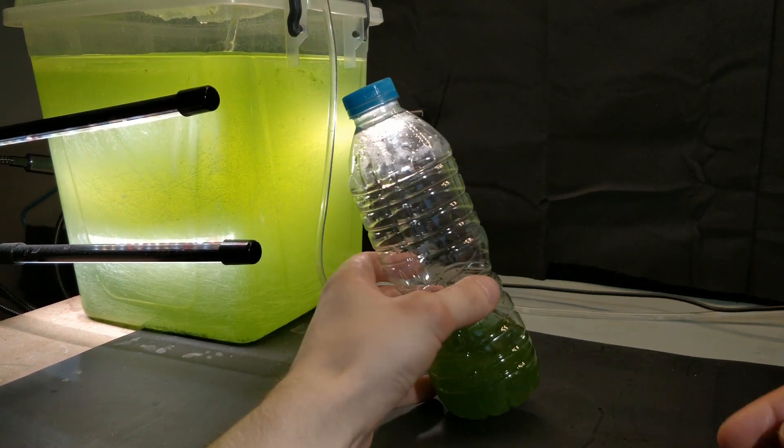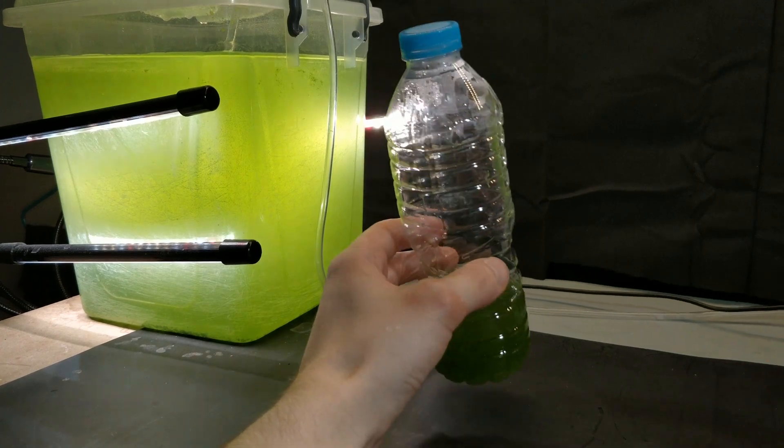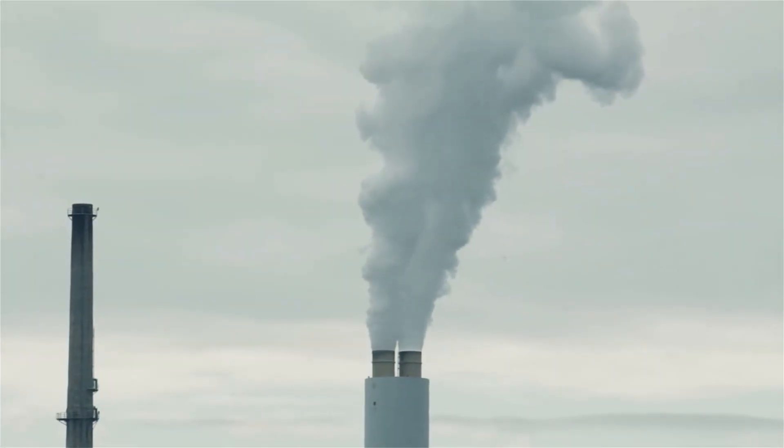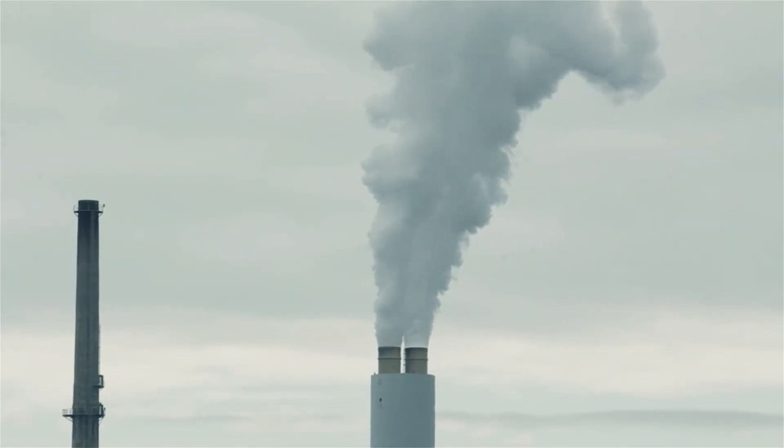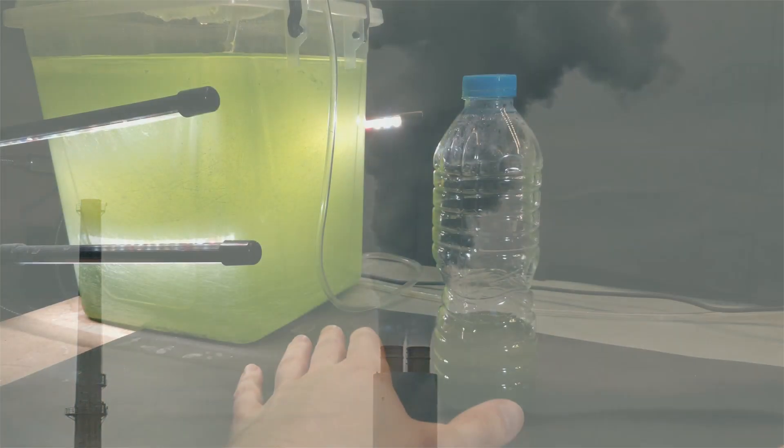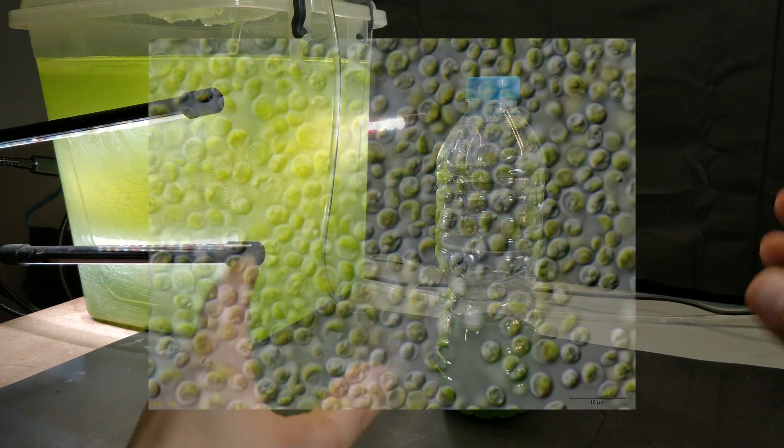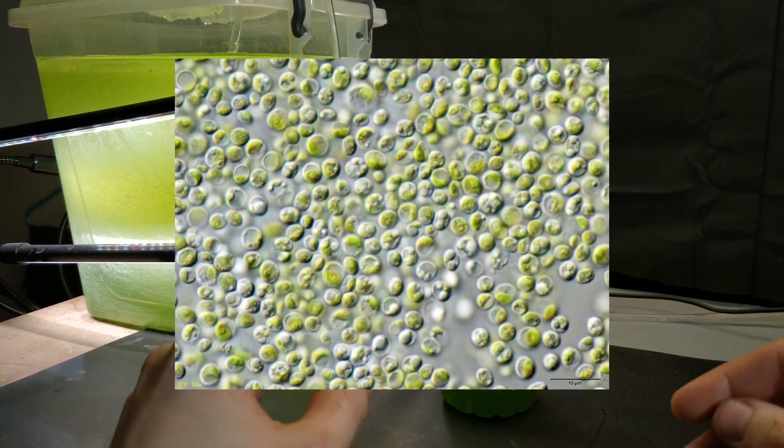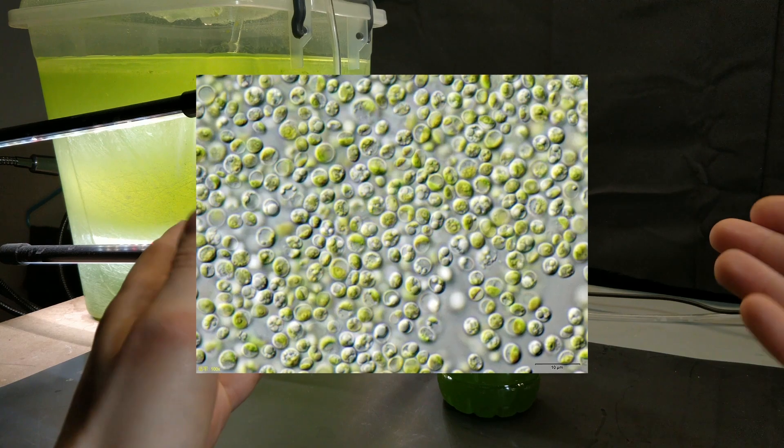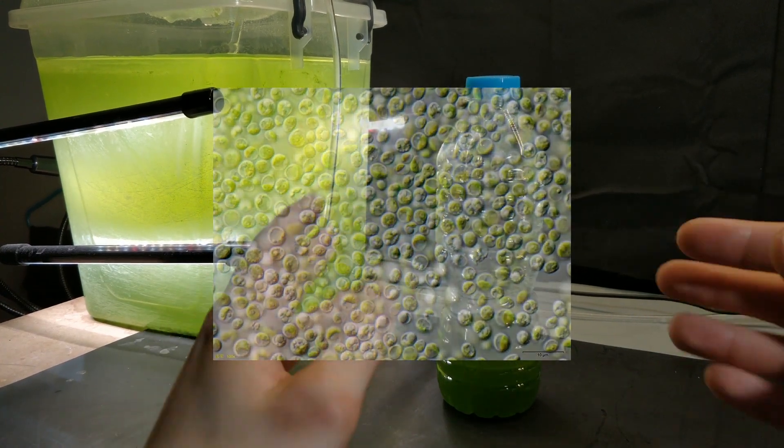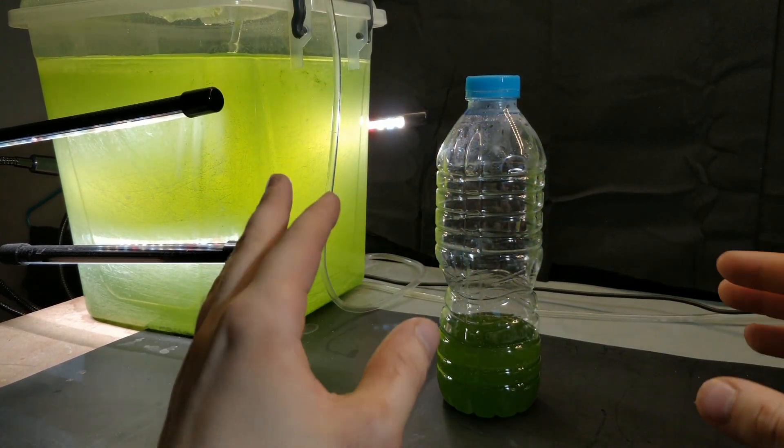It's also important to note that while not as effective as spirulina, chlorella still is a powerful agent in scrubbing CO2 from the atmosphere, so it's good from an environmental perspective as well. All of this makes chlorella an ideal candidate for a solar biofuel feedstock, which is what I intend to investigate further in the future.